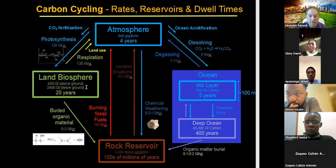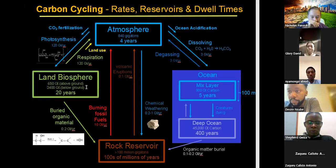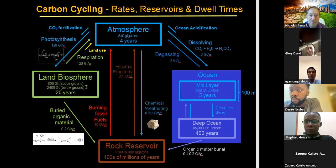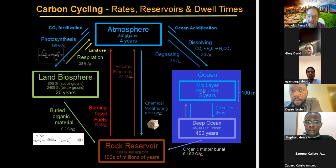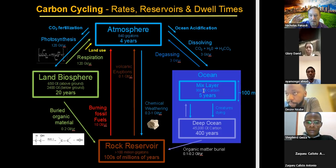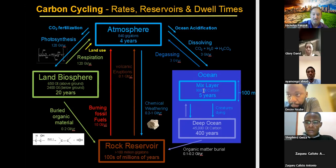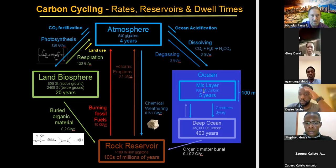Below the ground — buried material, worms, roots, all that kind of stuff — we're looking at about 2,400 gigatons, so a huge amount. In the ocean, we have about 900 gigatons in the mixed layer, which is the first hundred meters, and then below that, the rest of the deep ocean has about 45,000 gigatons of carbon.